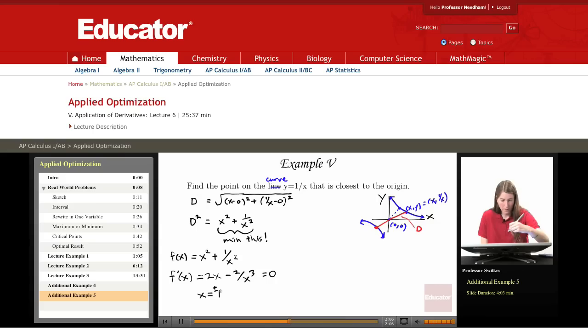So the distance involved would be radical 1 minus 0 squared plus 1 over 1 minus 0 squared, which is radical 2, or for x equals negative 1, same thing, we'll get radical 2.